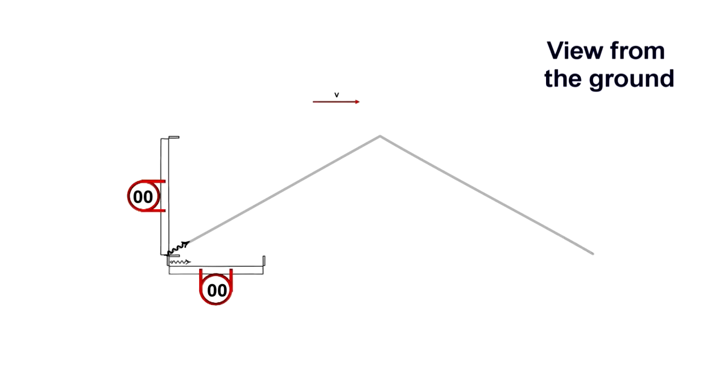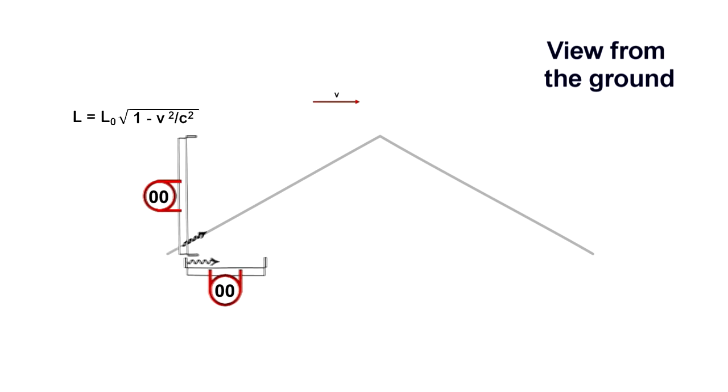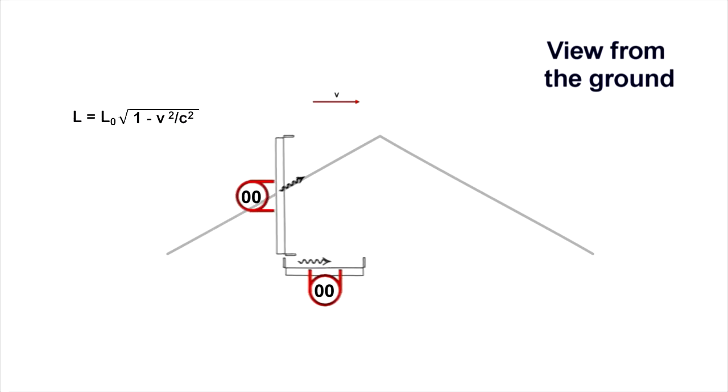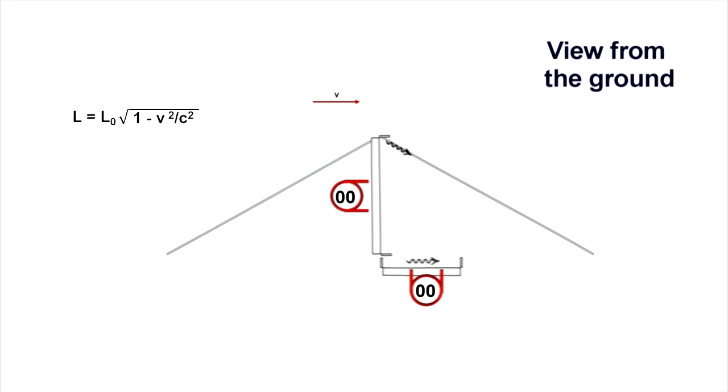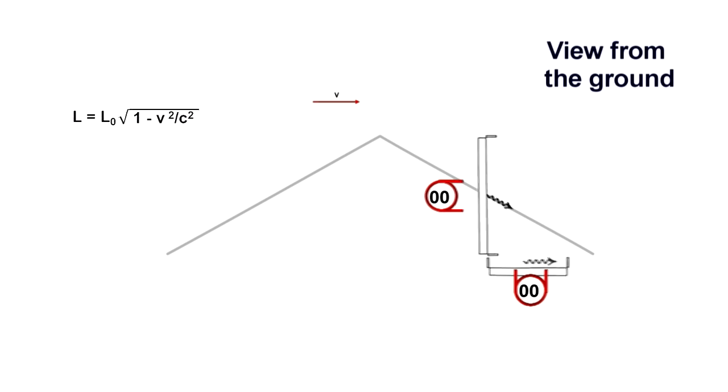The only way to bring the clocks back into sync is for the length of the distance traveled horizontally to shrink. And given the Lorentz transformation for distance, this is exactly what happens.